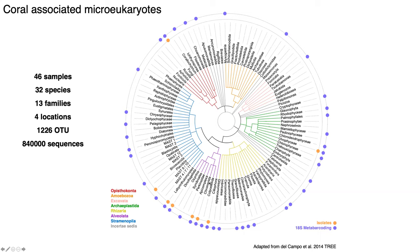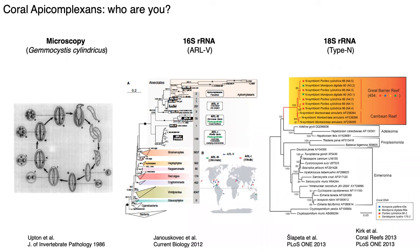I'd like to focus on the apicomplexans, one group we found particularly interesting within corals. We've known about coral apicomplexans since 1988 when an organism called Gemmocystis cylindricus was isolated and characterized from a coral by Upton et al. After that, molecular signals from apicomplexans from corals were reported using metabarcoding primers — both 16S and 18S. For 16S, the group called apicomplexan-related lineages 5 (ARL5) was reported again and again from different corals in different areas of the world, and for 18S, a group called Type N was also reported — but all three types of information could not be connected to each other because the approaches used were different.